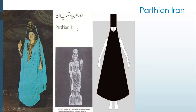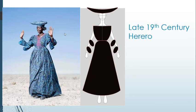Here we have an ancient Iranian example, very much noted by the large headpiece and straight lines coming down from the veil of the headdress. Here we have a Victorian-era or late 19th century garment from the Herero peoples of Namibia — a very interesting silhouette where they took a traditional Victorian silhouette and made it their own, creating their own flares.